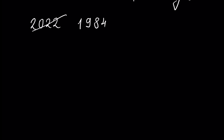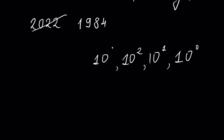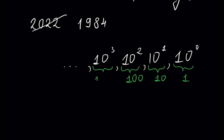Let us take the number 10 and write its powers: 10 to the power 0, 10 to the power 1, 10 to the power 2, 10 to the power 3, and so on. 10 to the power 0 is 1, 10 to the power 1 is 10, 10 to the power 2 is 100, and 10 to the power 3 is 1,000. We will represent our number as a linear combination of these powers of 10.